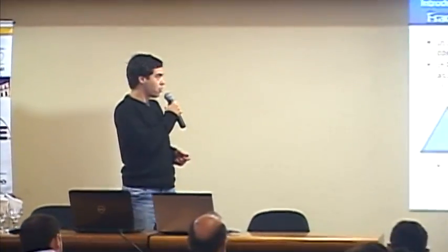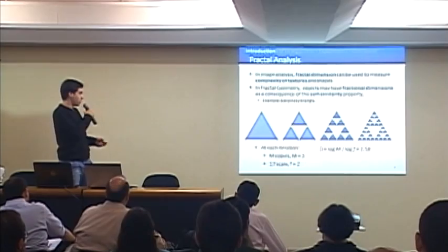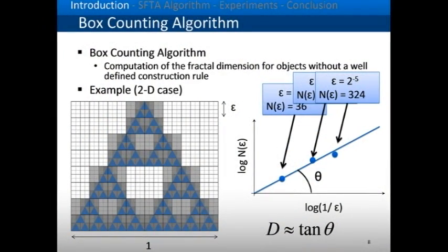Another approach that may be more efficient for texture feature extraction is fractal analysis. In fractal geometry, objects may have fractional dimensions, and this fractal dimension can be used to infer the texture complexity of images. For example, the Sierpinski triangle is built by generating three copies at scale one-to-two per dimension. However, for image feature extraction, we do not have a well-defined construction rule, so we must take another approach to compute the fractal dimension.